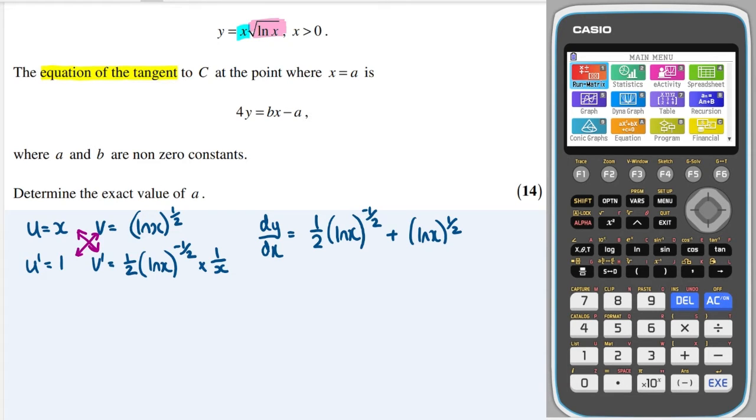Now it's asked me to work out the tangent at the point x equals a, so I need to find the gradient at x equals a. Okay, so dy/dx at x equals a is, we'll just sub a in for x into the gradient function. So I get a half (ln a) to the minus a half, plus (ln a) to the half.